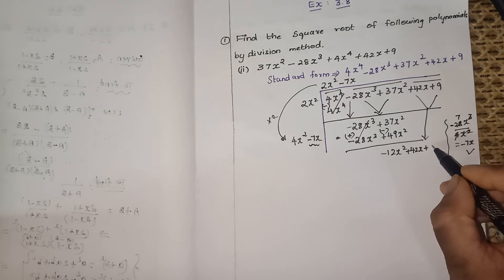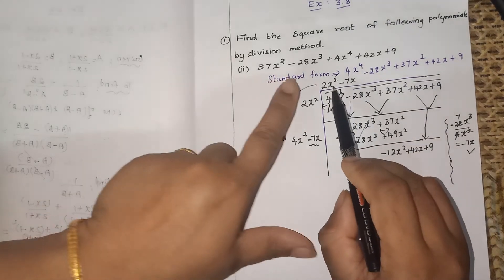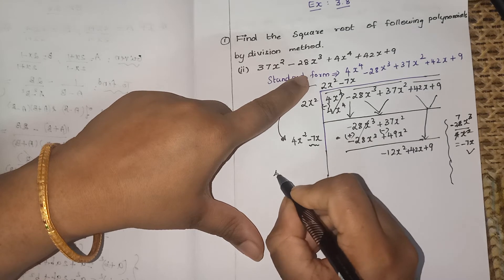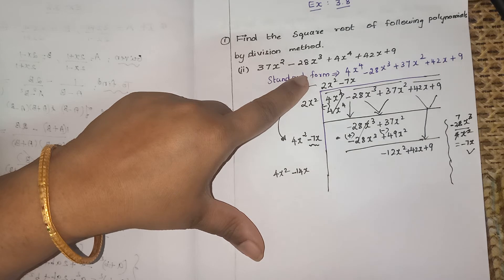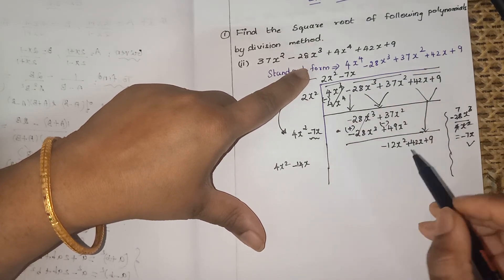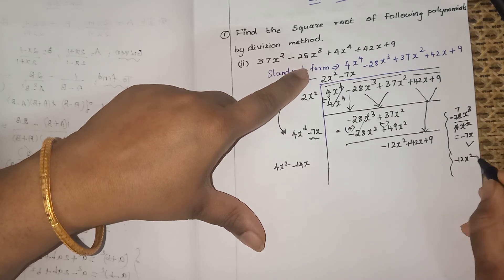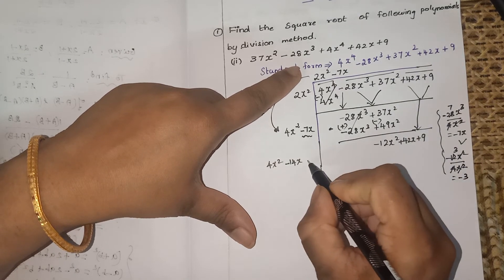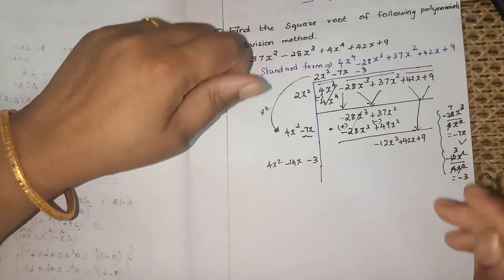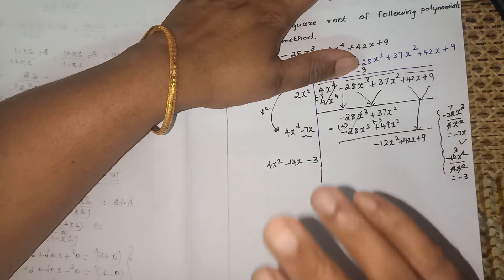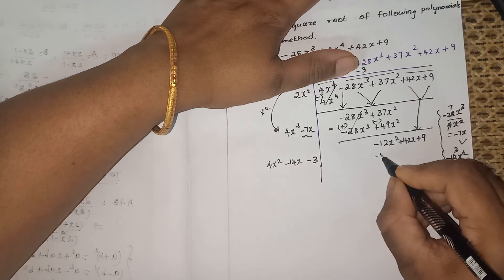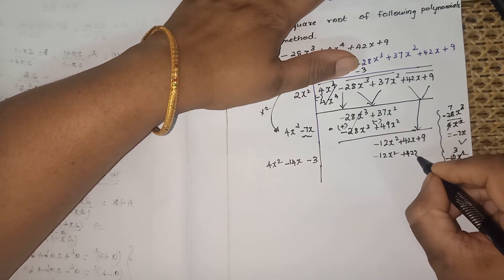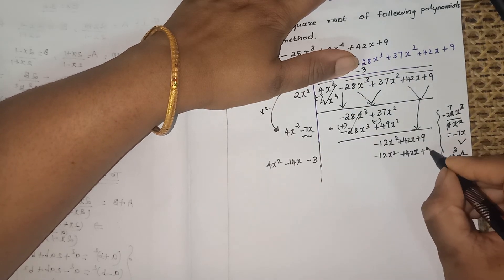Now multiply the full two-term quotient (2x² minus 7x) by 2: 2x² × 2 = 4x², and minus 7x × 2 = minus 14x. The new divisor is 4x² minus 14x. To find the third quotient term, divide minus 12x² by 4x² = minus 3. Write minus 3 in the quotient and alongside the divisor.